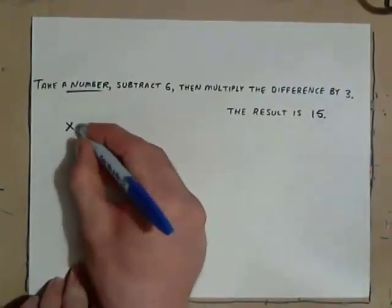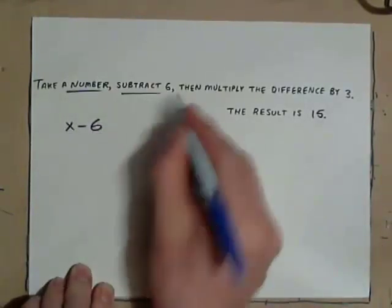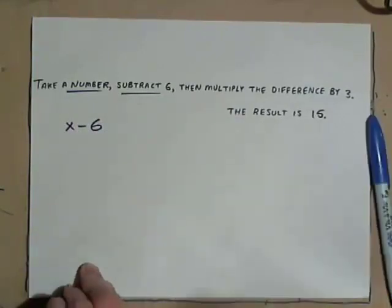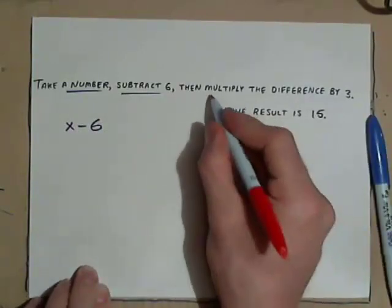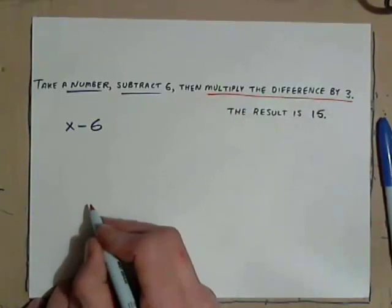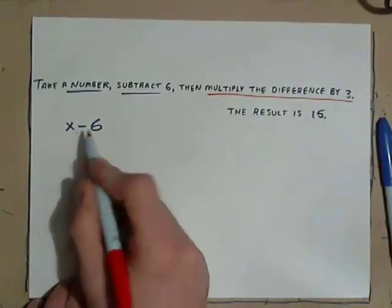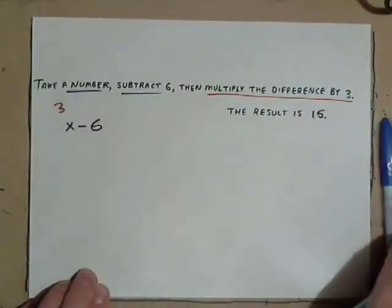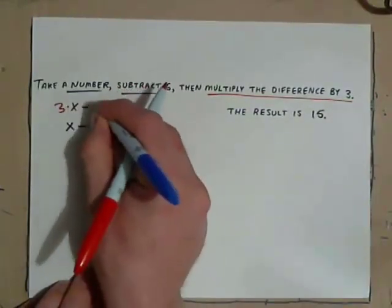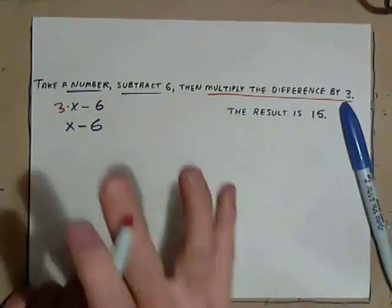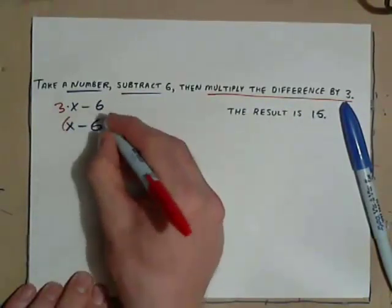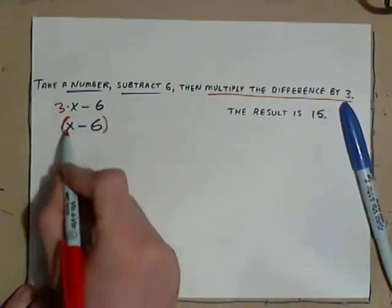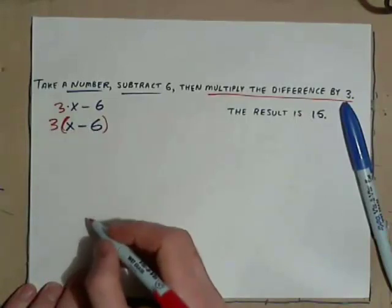Subtract 6. Subtract 6. Multiply the difference by 3. This difference is the whole thing. The common mistake is to just write down 3 times x minus 6. Most people do that. What you've got to do is take the entire thing, the difference, the entire thing, and multiply all of that by 3.